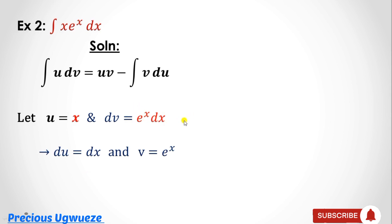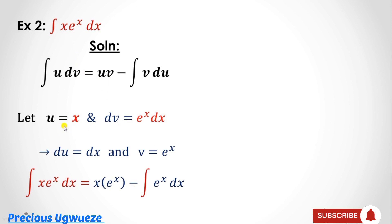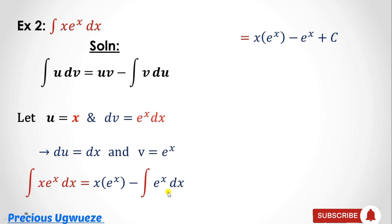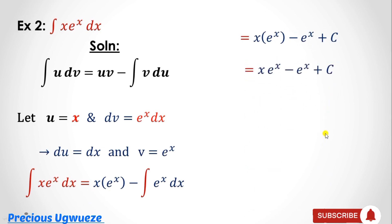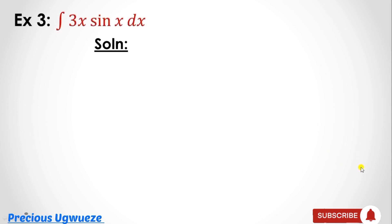Integrating eˣ gives v = eˣ. Substituting into the formula: u·v − ∫v·du = x·eˣ − ∫eˣ·dx. Integrating eˣ again gives eˣ. So the solution is x·eˣ − eˣ + C, which can be factorized as eˣ(x − 1) + C.